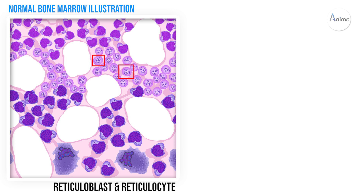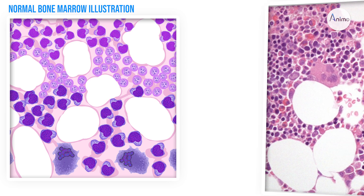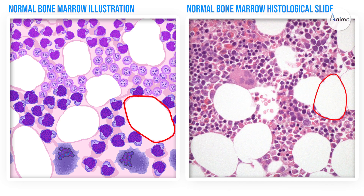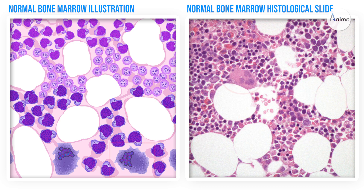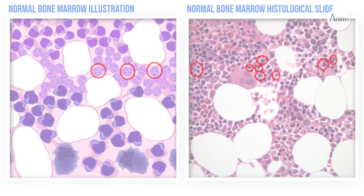Now let's move on to the real histological slide of bone marrow aspiration of aplastic anemia. Here we see the adipocytes, a megakaryocyte, mature myeloblasts, immature myeloblasts, and lastly the reticuloblast.